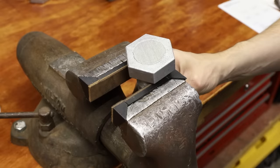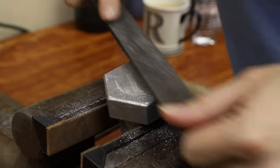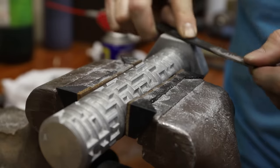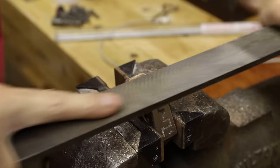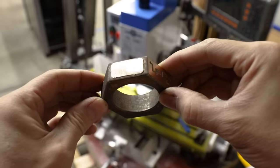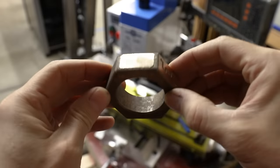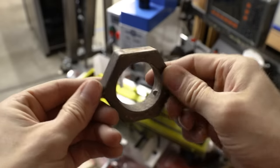Next, I spent a few hours deburring and filing everything smooth. This is the kind of thing that would be a lot easier to do if I had a vertical milling machine. Well, maybe someday.